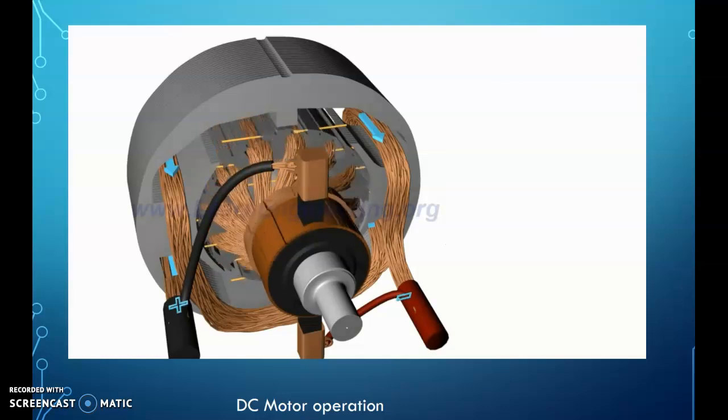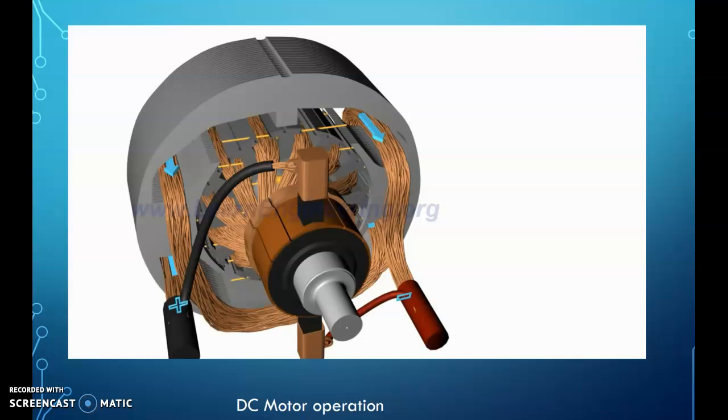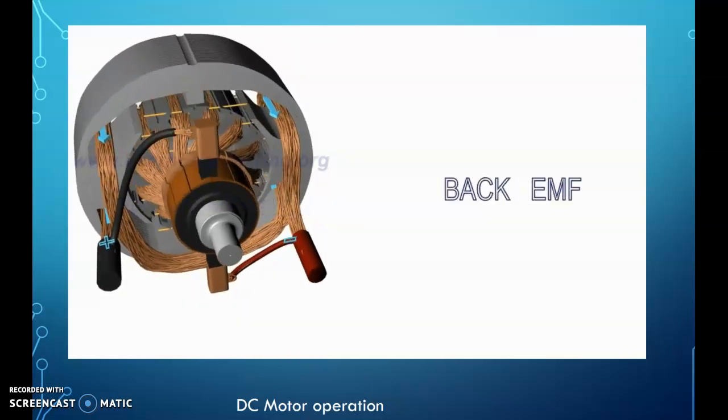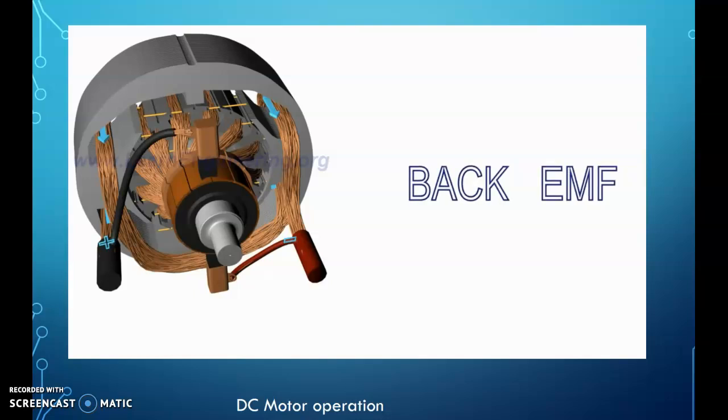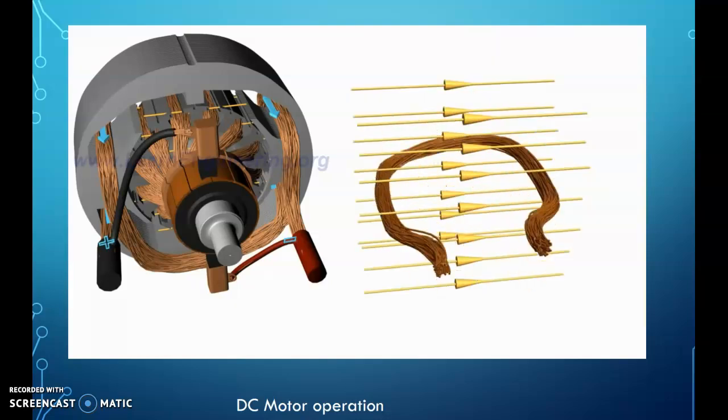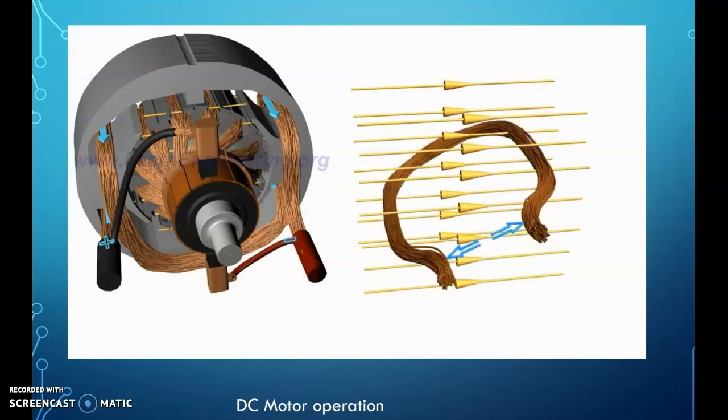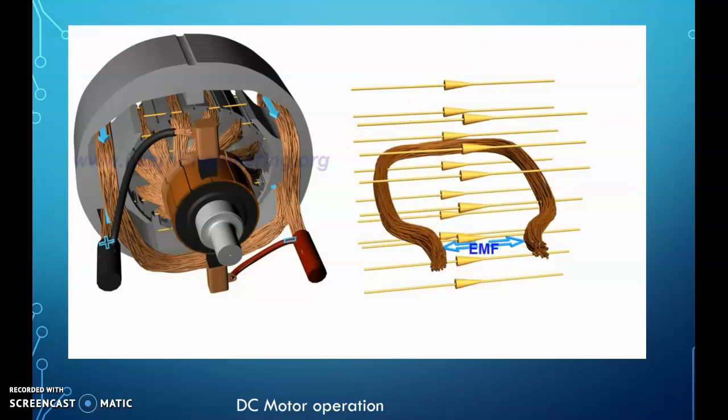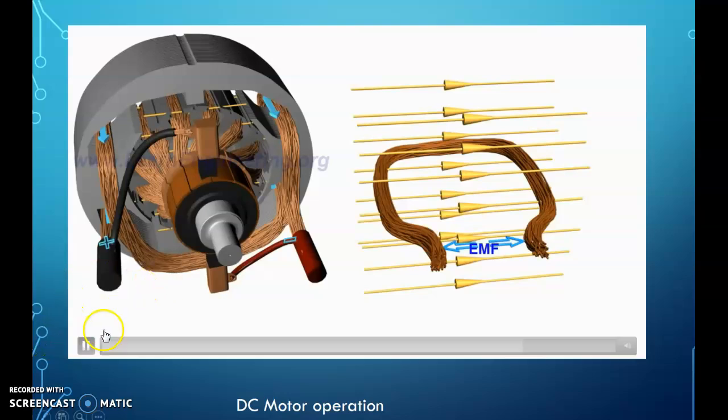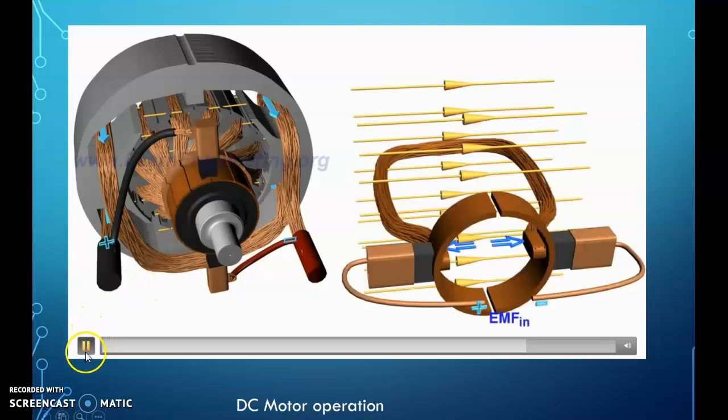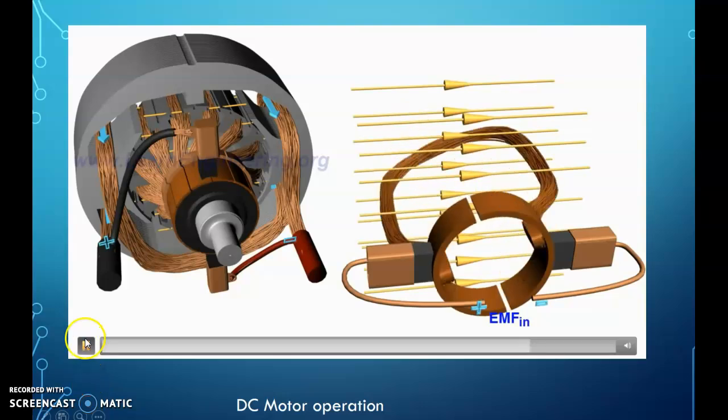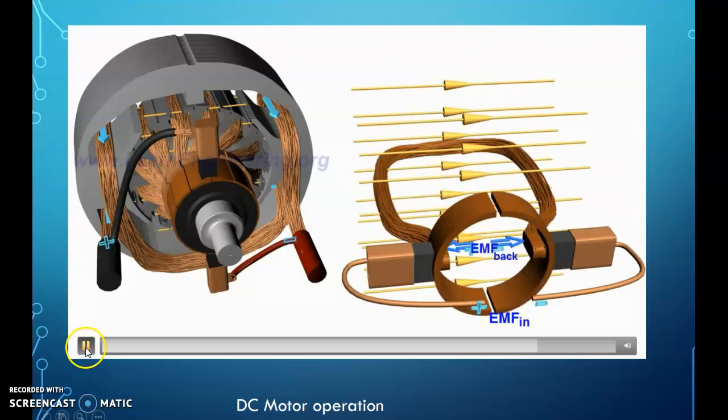Unlike other electrical machines, DC motors exhibit a unique characteristic: the production of back EMF. A rotating loop in a magnetic field will produce an EMF according to the principle of electromagnetic induction. The case of rotating armature loops is the same. An internal EMF will be induced that opposes the applied input voltage.